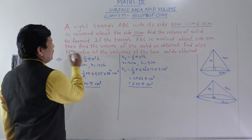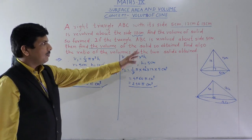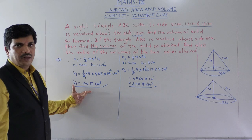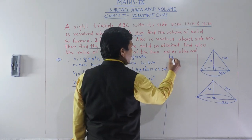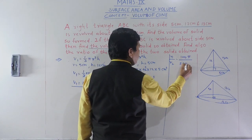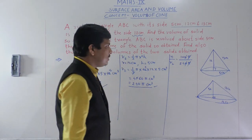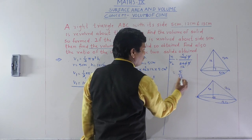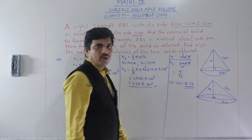Now they are asking for the ratio of the volumes. V1 : V2 = 100π / 240π. Since π cancels, we get 100/240. Both are divisible by 20, giving 5/12. Therefore V1 : V2 = 5 : 12. We have obtained the required answer.